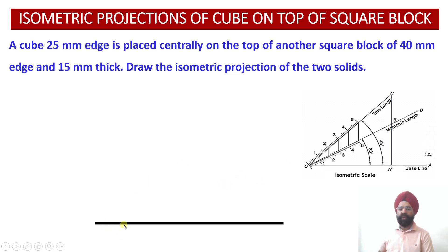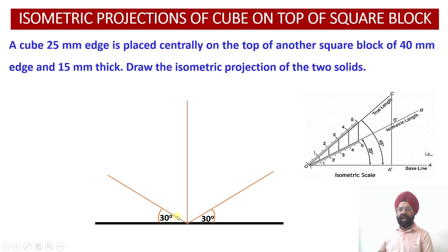Step number 1: we are going to draw the horizontal ground line. Then we mark a point and draw the x-axis. Here we get the y-axis and here we get the z-axis. The x-axis and the z-axis — that is the isometric axis — will be drawn at an angle of 30 degrees each. Now we are required to draw the isometric projections of the square block where the base is square, equal to 40 mm, and the height of the square block is 15 mm.